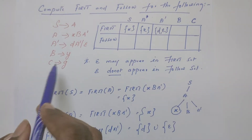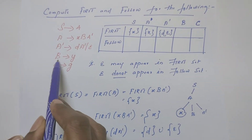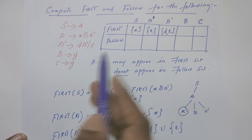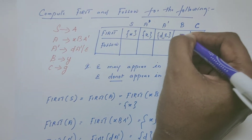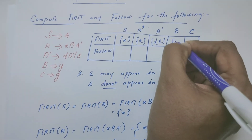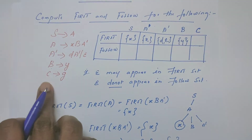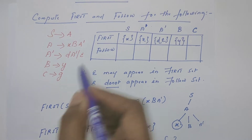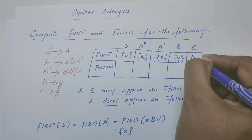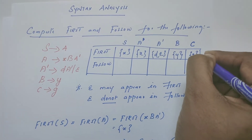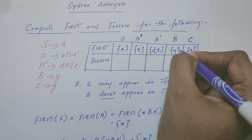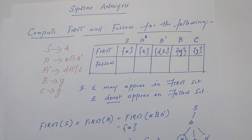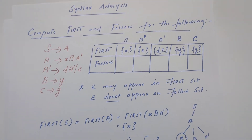Next, let us check what is first of B. Since B directly produces Y, first of B is Y. First of C: from the rule itself, we can easily identify first of C is G. So we have computed the first set for all the grammar symbols.